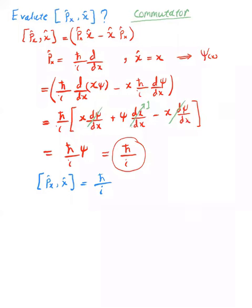And again, if we do the commutator, for example [x, Px], if we do this in the same way, we will end up with minus h bar over i.